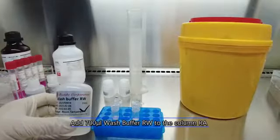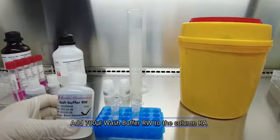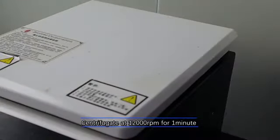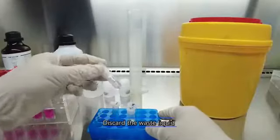Add 700 µL wash buffer AW to the column I. Centrifugate at 12,000 revolutions per minute for two minutes. Discard the waste liquid.